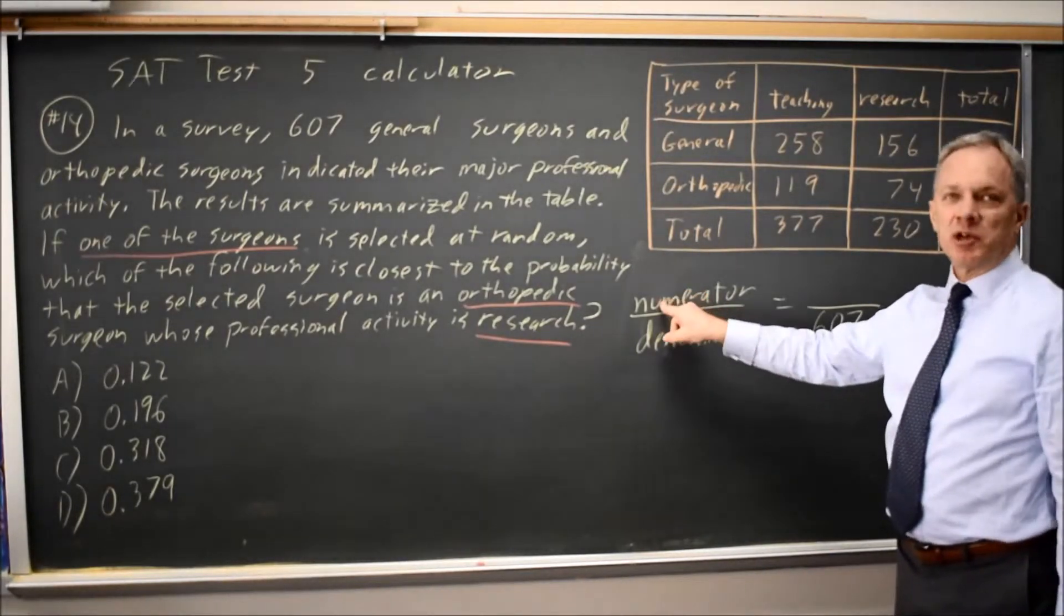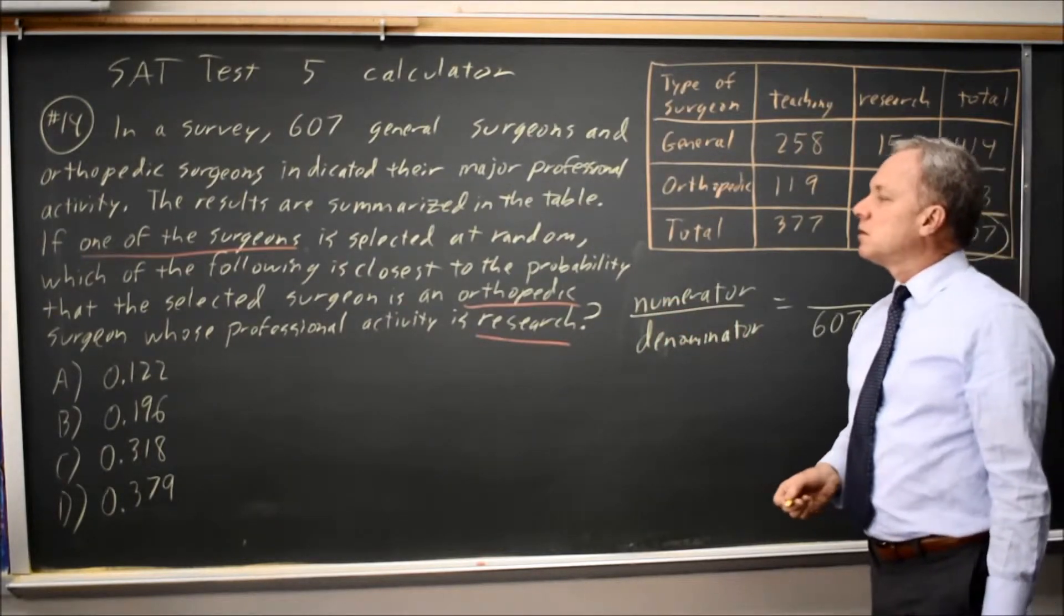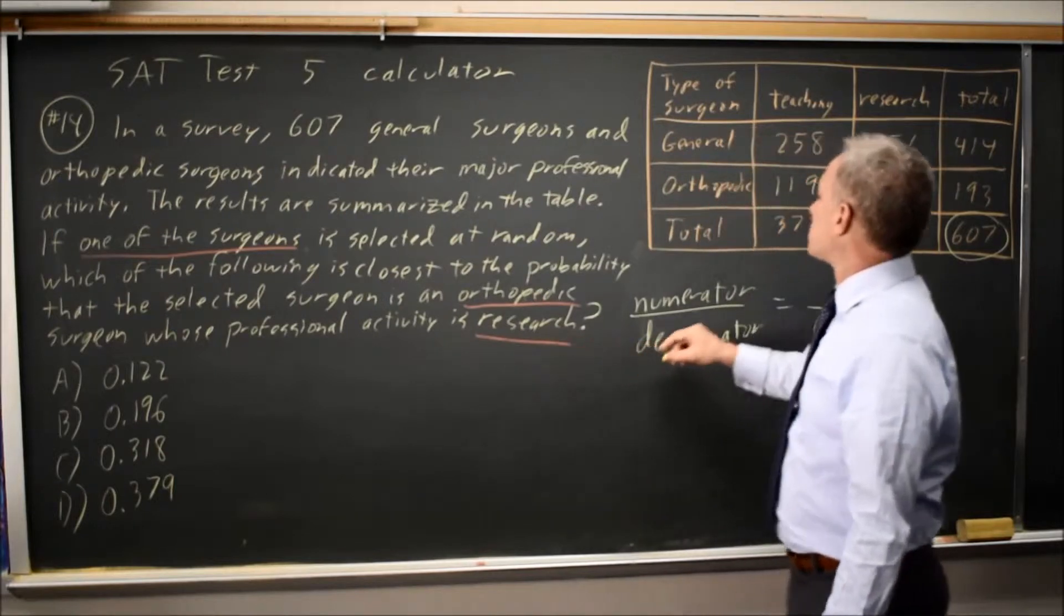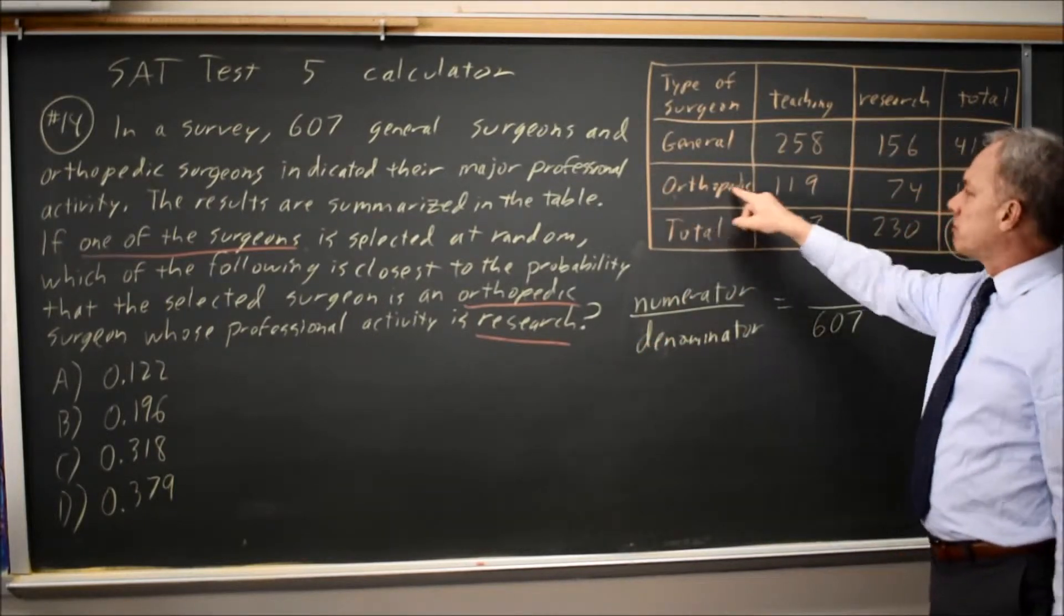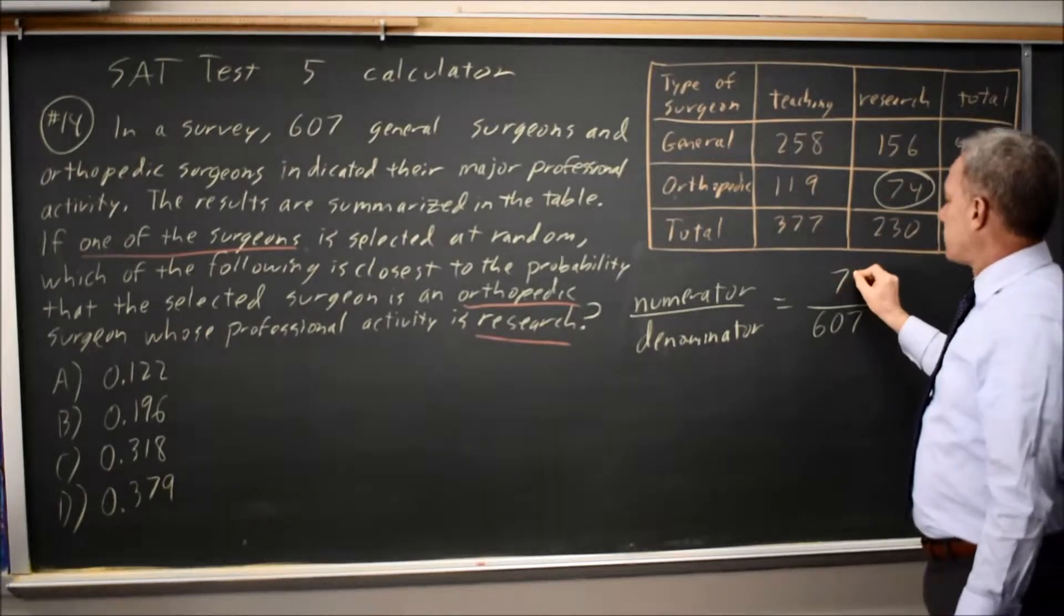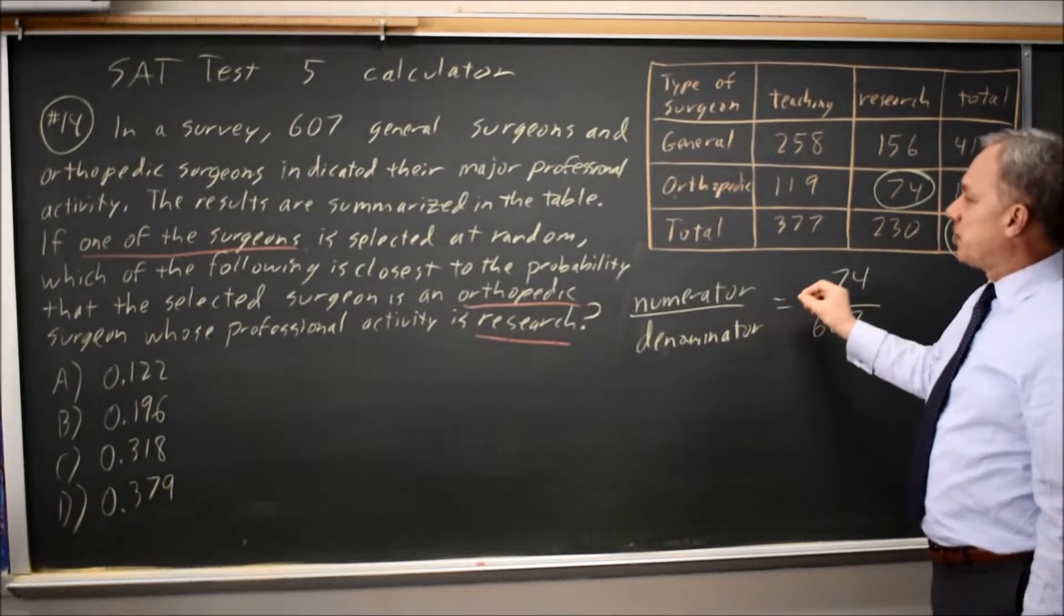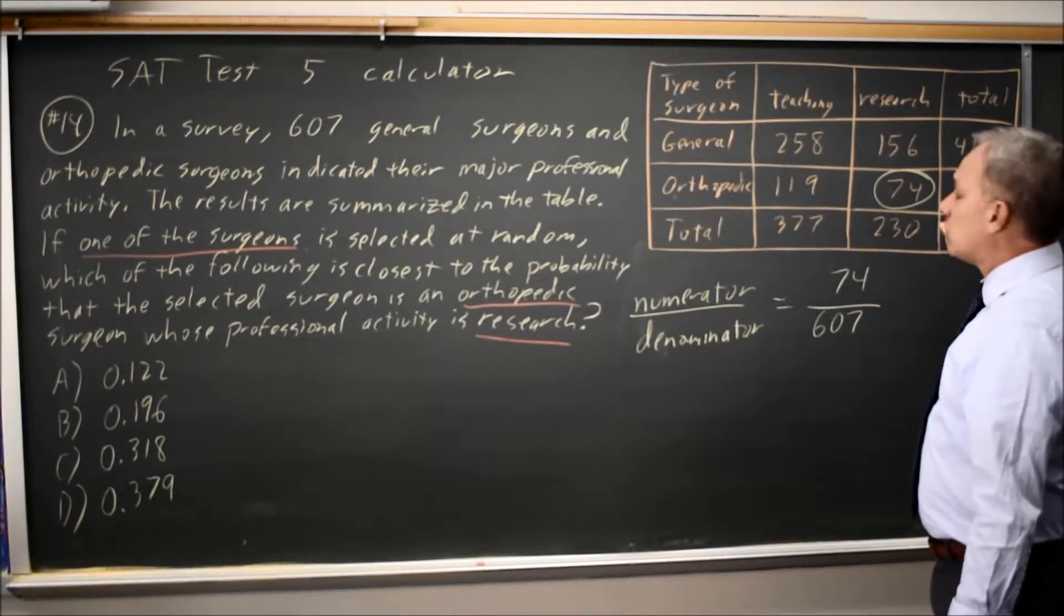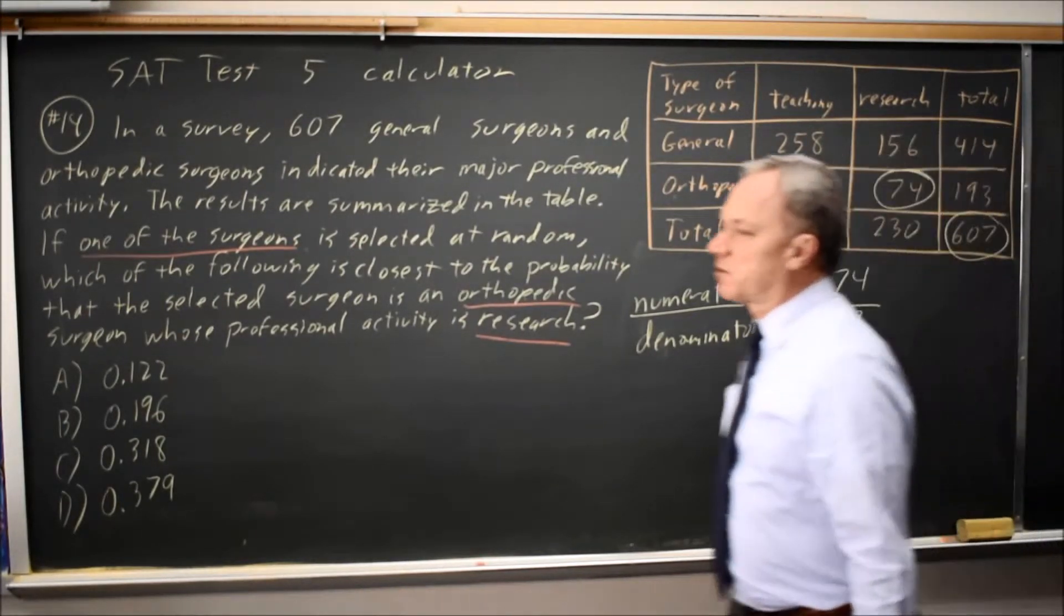Now we want the numerator. Of all those surgeons, which ones are orthopedic surgeons whose professional activity is research? You go to the row for orthopedic and the column for research, and that would be 74. So our probability of orthopedic and research is 74 over the total number of surgeons, which is 607.